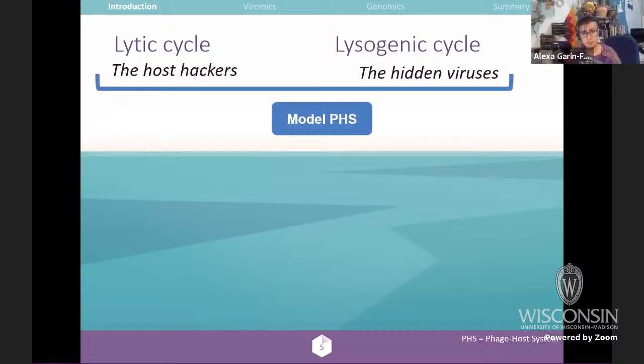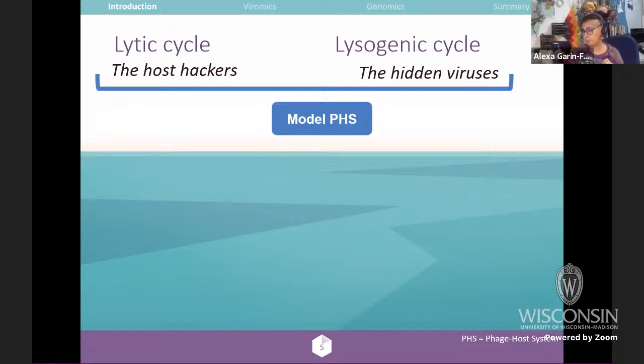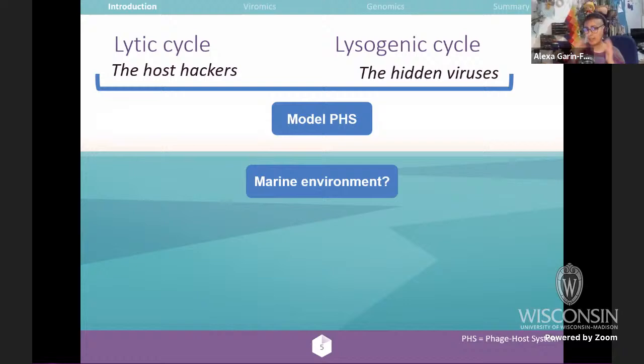Both cycles have been described mostly in model phage-host systems, where you have an isolated virus and bacterium and can characterize each step. But what happens in the marine environment? In environmental samples, we can only isolate a small percentage of bacteria — so you can imagine how few phage isolates we have from that environment. Therefore, most of the phage diversity is unknown.